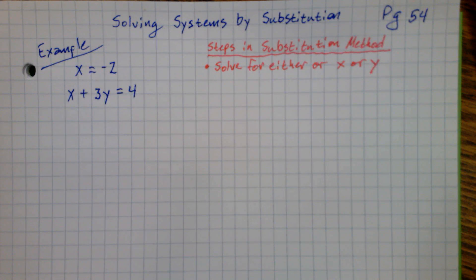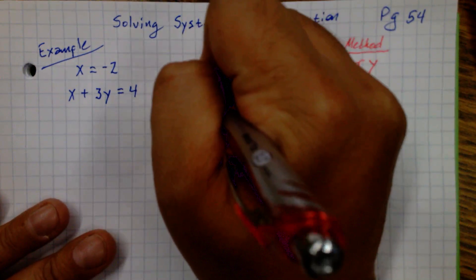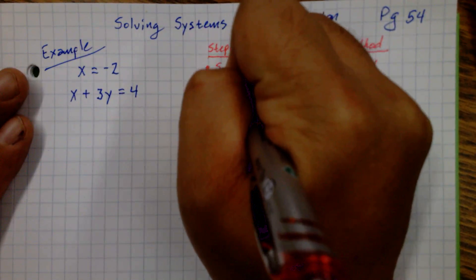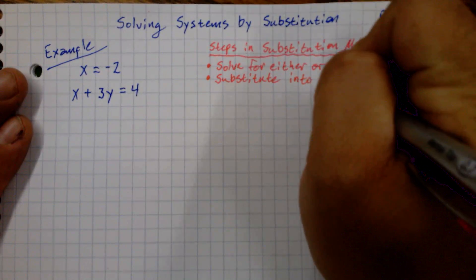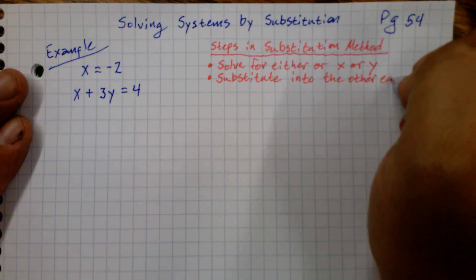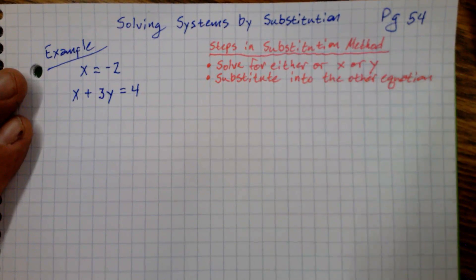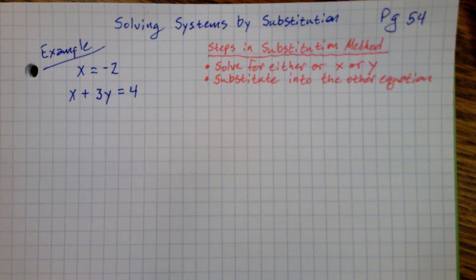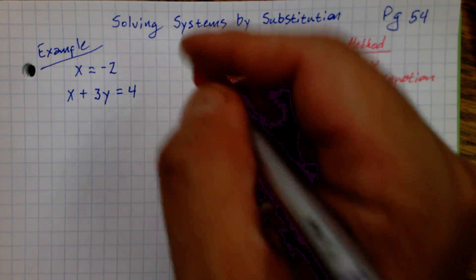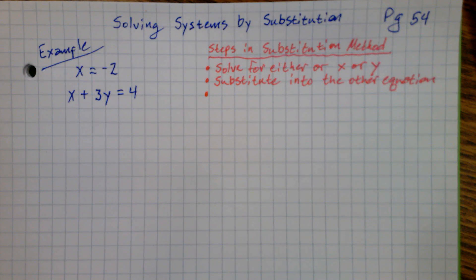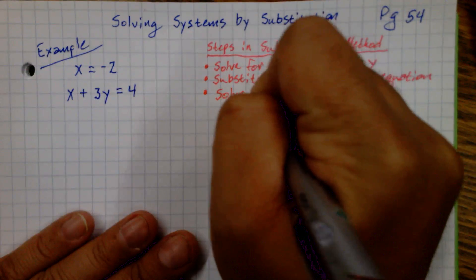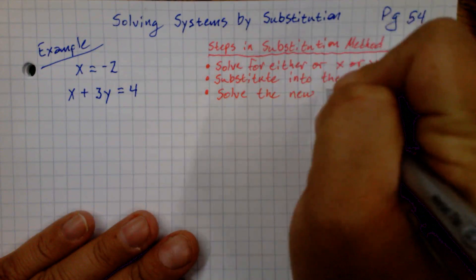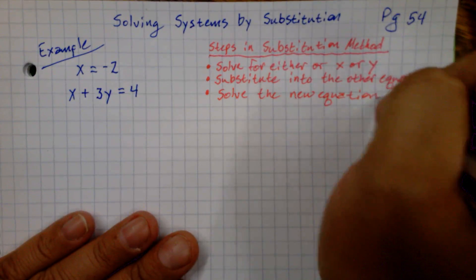All of our systems today are going to have one of the equations already solved for a variable. The second step — the main step — is to substitute into the other equation. The third step is to solve the new equation, something we've done quite a bit in seventh and eighth grade.